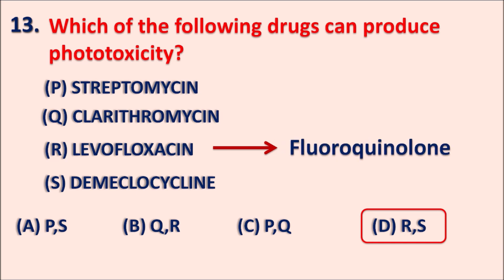Levofloxacin is a fluoroquinolone antibiotic — a third generation fluoroquinolone — and demeclocycline is one of the tetracyclines. Tetracyclines and fluoroquinolones can produce phototoxicity. Whenever patients are on these drugs for longer periods, they should not be directly exposed to sunlight, which may produce phototoxicity resulting in skin rashes and itching. Among antibacterials, these two categories mainly show phototoxicity.